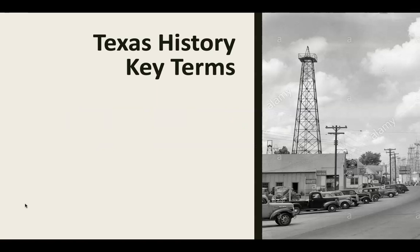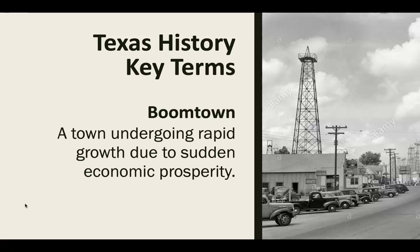First things first, let's talk about a couple of key terms. You'll find your key terms on your Google notes — your C-notes, your Google Doc version, or your printed copy in class. They're going to be in the left-hand column. Our first key term is boomtown. We've talked about boom and bust: when things are booming they're going really well, when things are bust they're not too good. A boomtown is a town undergoing rapid growth due to sudden economic prosperity — people are making money and a town grows up wherever that money source is coming from.